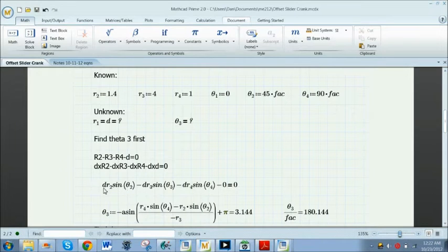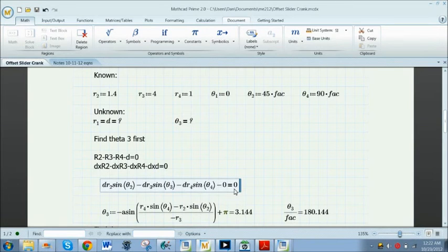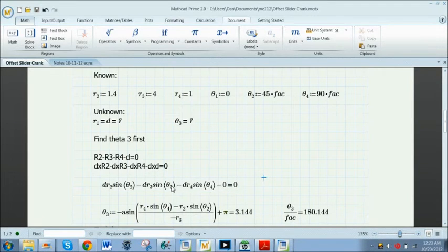If you look at this equation, we have a D in every term. You can factor that out and divide by D, or just divide by D anyway you cut it. You can get rid of that unknown variable D and we're left with the only unknown variable here, theta 3.